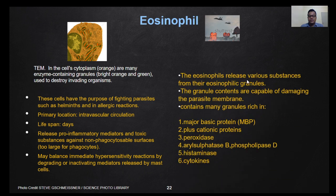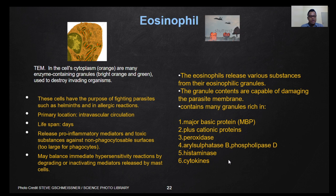Eosinophils release various substances from their eosinophilic granules. The granule contents are capable of damaging the parasite membrane. The granules are rich in major basic protein, cationic proteins, peroxidase, arylsulfatase B, phospholipase D, histaminase, cytokines, and a few others.